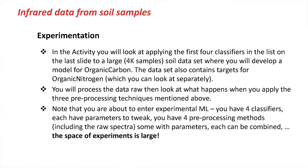The activity involves processing roughly 4,000 soil samples, and you'll be looking to develop a model for organic carbon as the Y value. Organic nitrogen is also in the data set if you want to repeat the activity using that instead. You'll process the data raw first to establish a benchmark, then apply preprocessing techniques and observe the results. The classifiers respond differently to different preprocessing methods — some get better, some get worse, some stay the same.